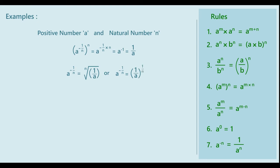Similarly, for a rational number P upon Q, we can write: A raised to minus P upon Q is equal to 1 upon A raised to P upon Q.